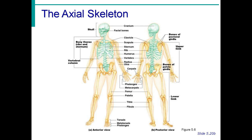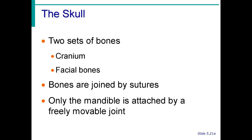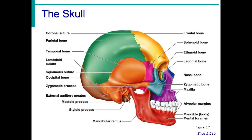The axial skeleton forms the longitudinal part of our body and is divided into three parts: the skull, the vertebral column, and the bony thorax. The skull has two sets of bones: the cranium and the facial bones. Bones are joined by sutures, which are lines connecting two bones. The major bones of the cranium include the frontal bone, the parietal bone, the temporal bone, and the occipital bone.